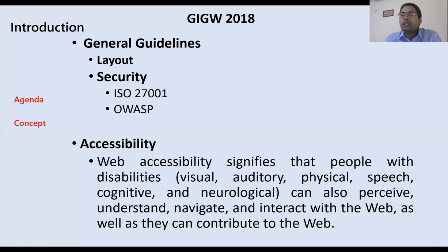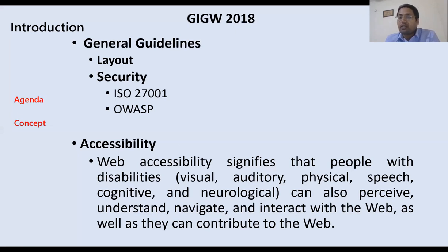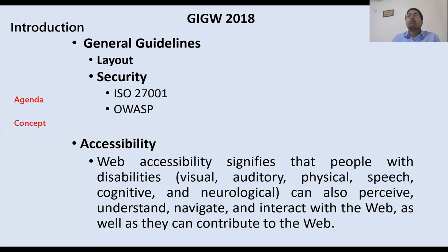GIGW is divided into two parts. The first is related to general guidelines, and the second is the accessibility guideline. General guidelines include how the website should be visible and what security aspects it should fulfill.